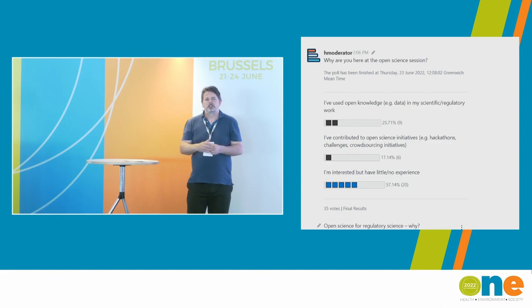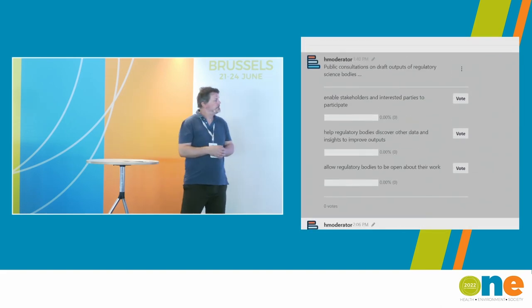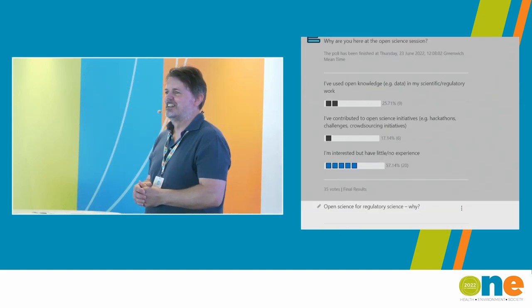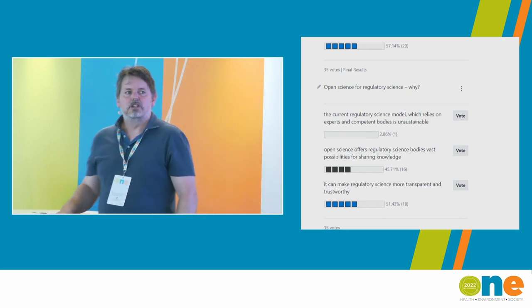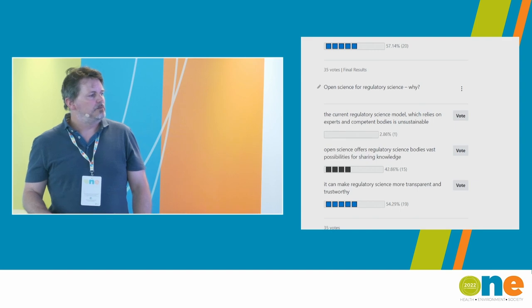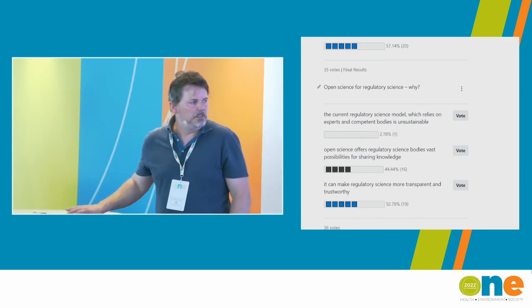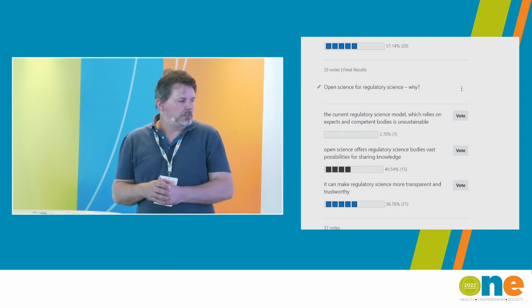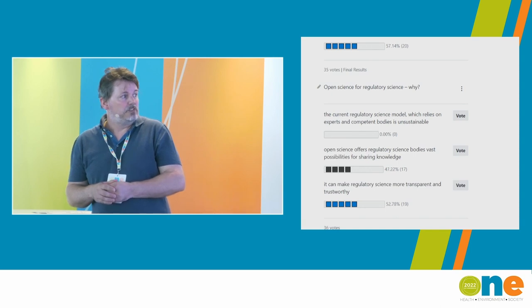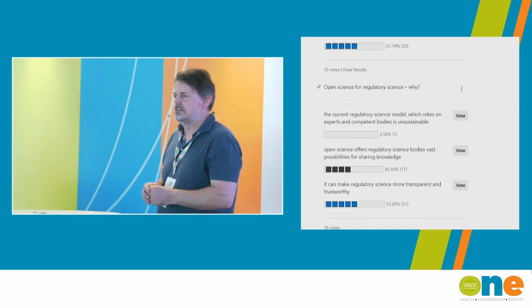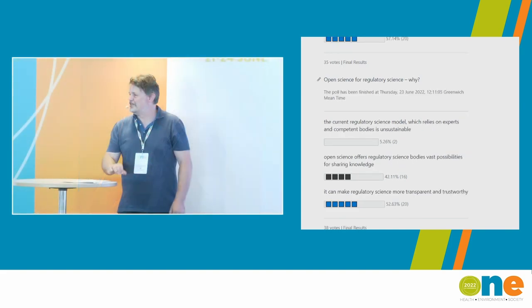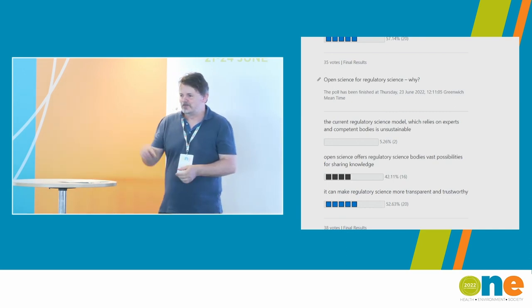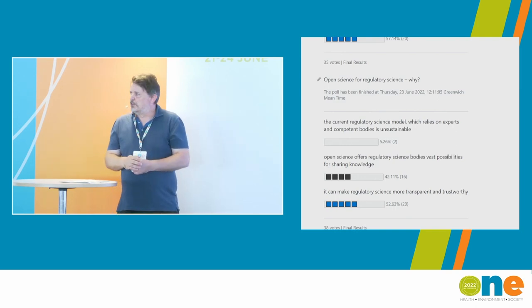More or less we've got two of the options which have been most popular: open science offers regulatory science bodies vast possibilities for sharing knowledge, and it can make regulatory science more transparent and trustworthy. We got zero on the first one — people are still very confident in the current model. That's a resounding vote of confidence, with just a couple of people maybe less confident. There's no wrong answer — it's just showing more of a focus on opportunities rather than what isn't perfect.